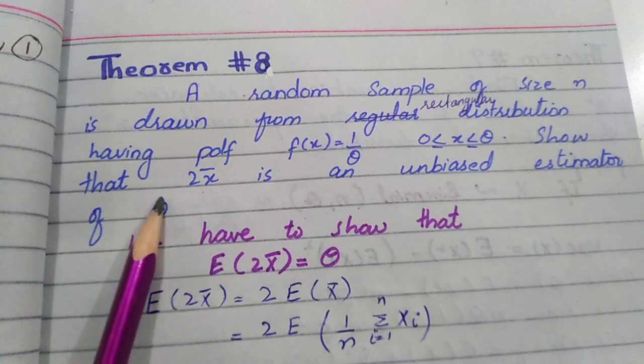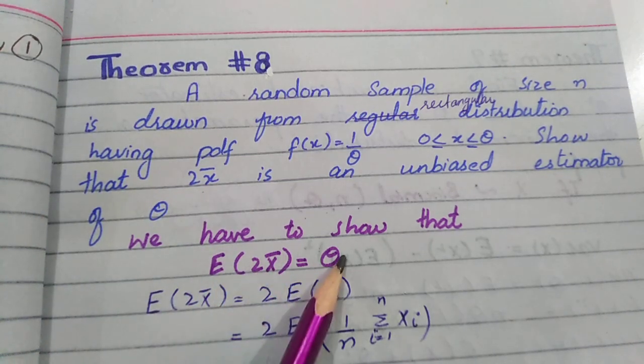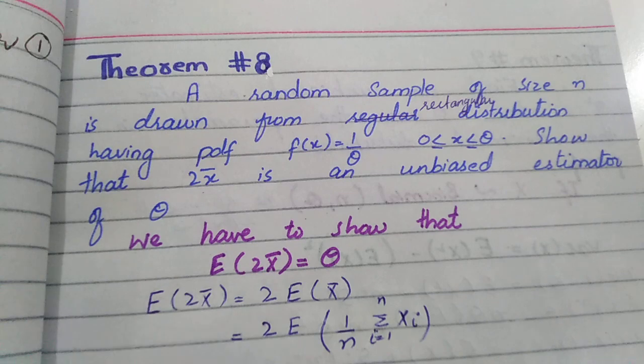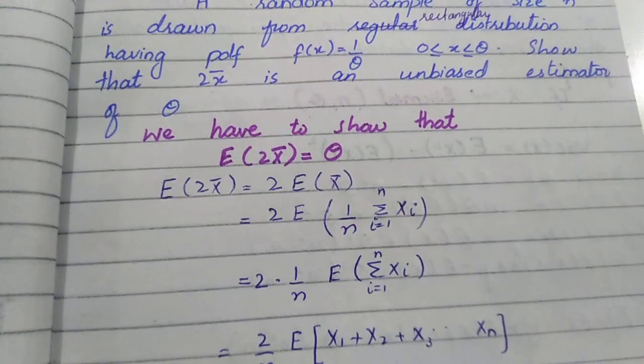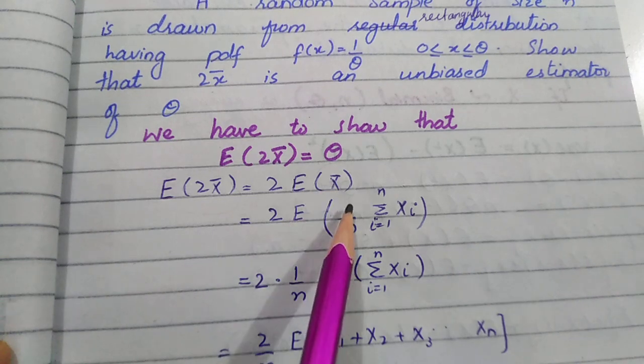First we have written the expectation of 2x̄ equals θ, and we have written what it is. In this case we will take the left-hand side. So here we have applied 2 to the front, and expectation—we have a formula for x̄: one by n summation of Xi.